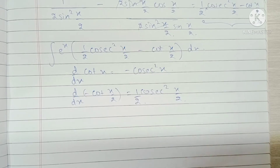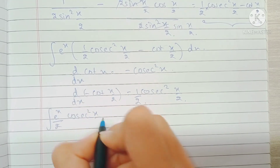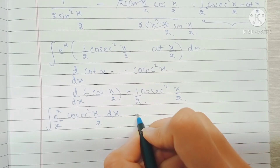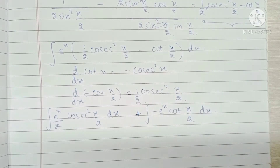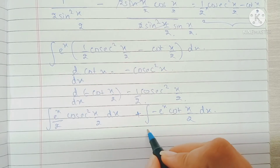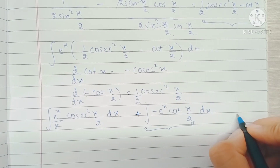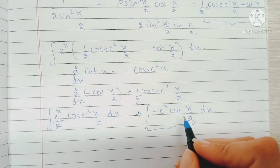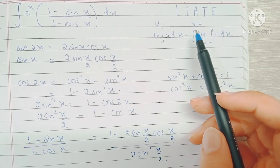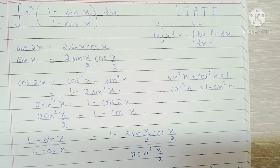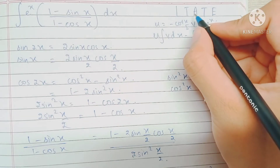Let's write our integral as two different integrals: the integral of (e^x / 2)cosec²(x/2) dx, plus the integral of minus e^x·cot(x/2) dx. We use the by parts rule on the second integral, using the LIATE rule — placing e^x as the v term and minus cot(x/2) as the u term, since the exponential term comes after the trigonometric term in the LIATE rule.